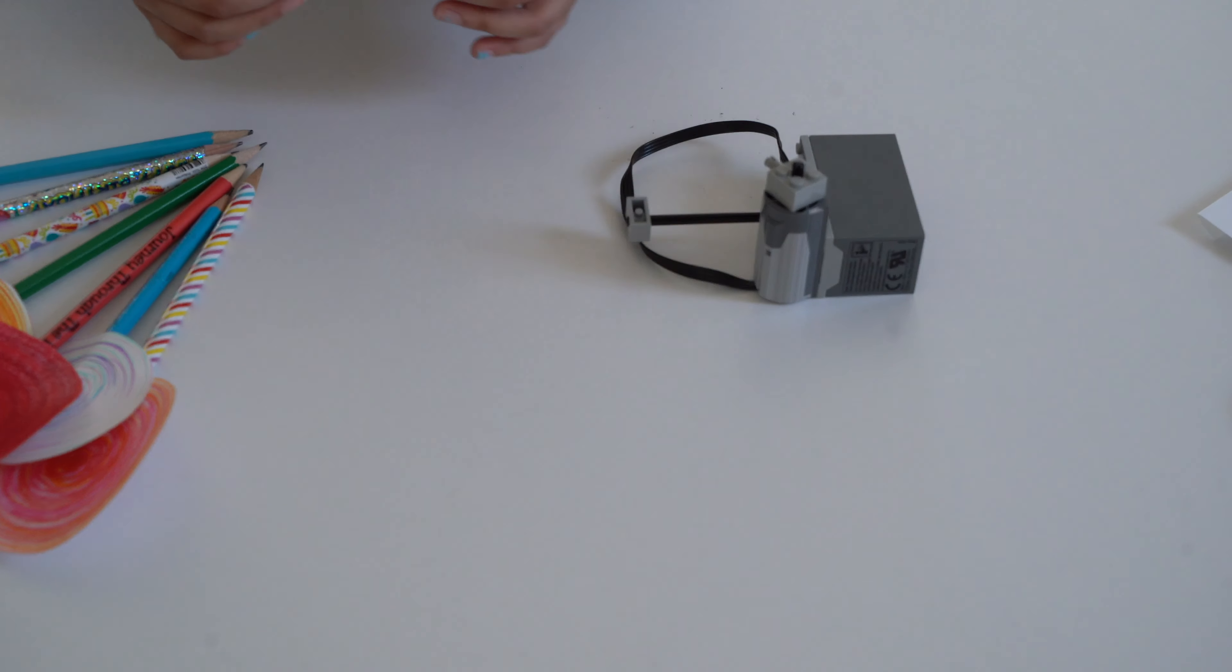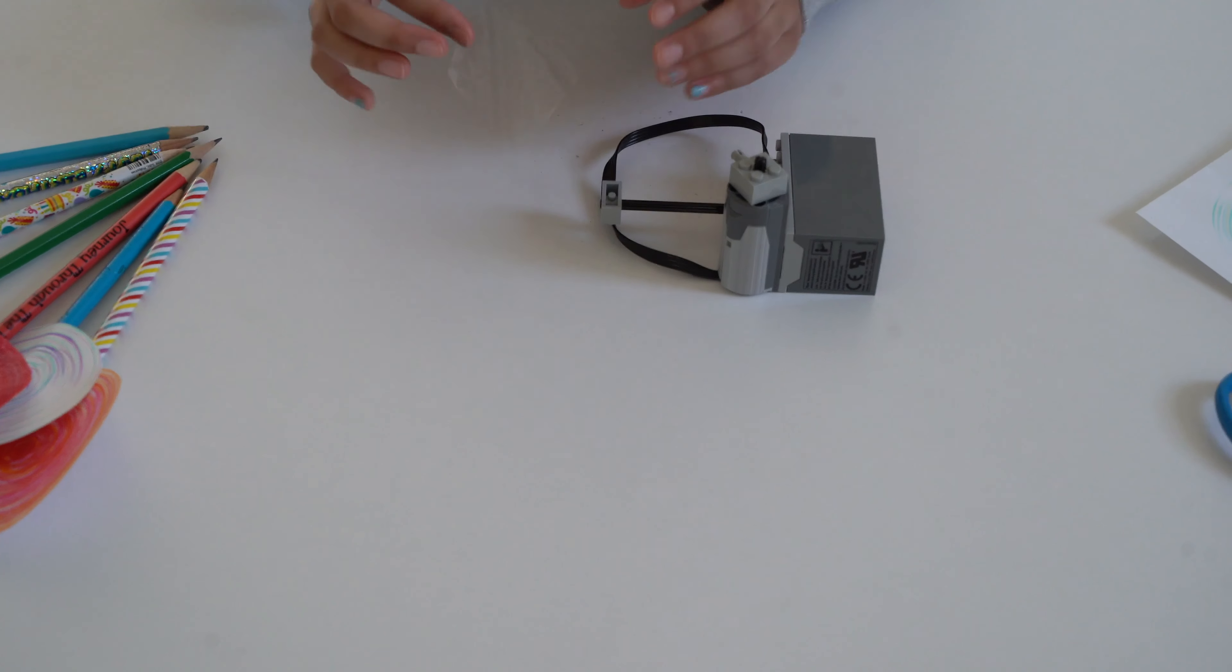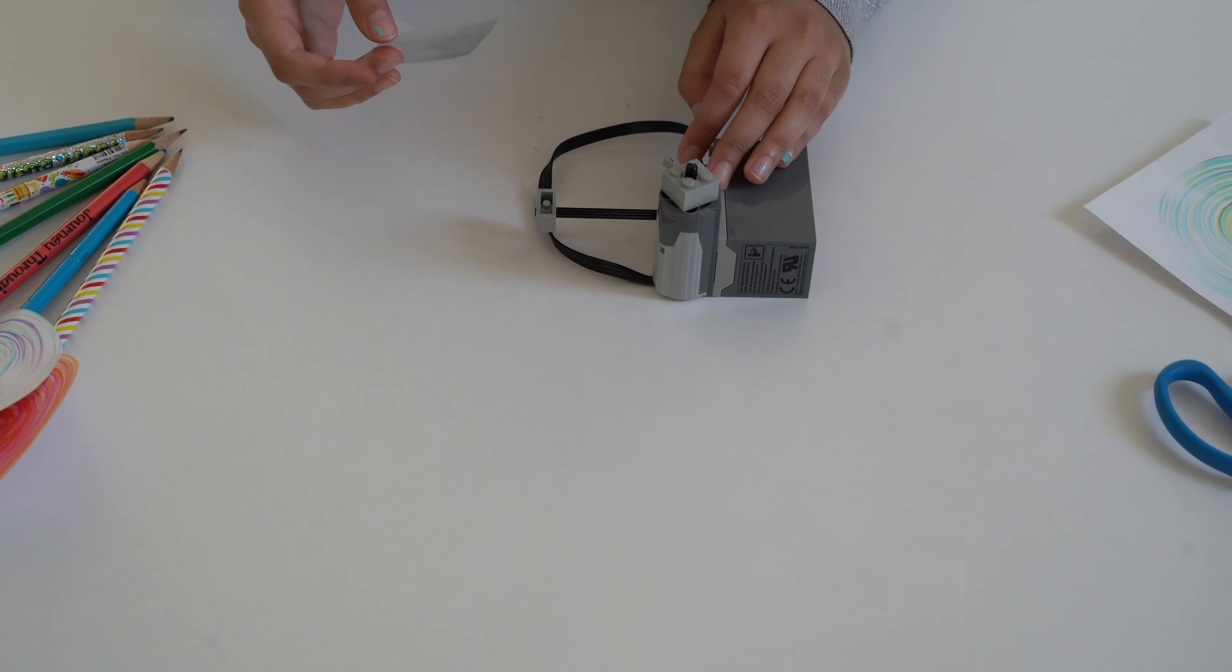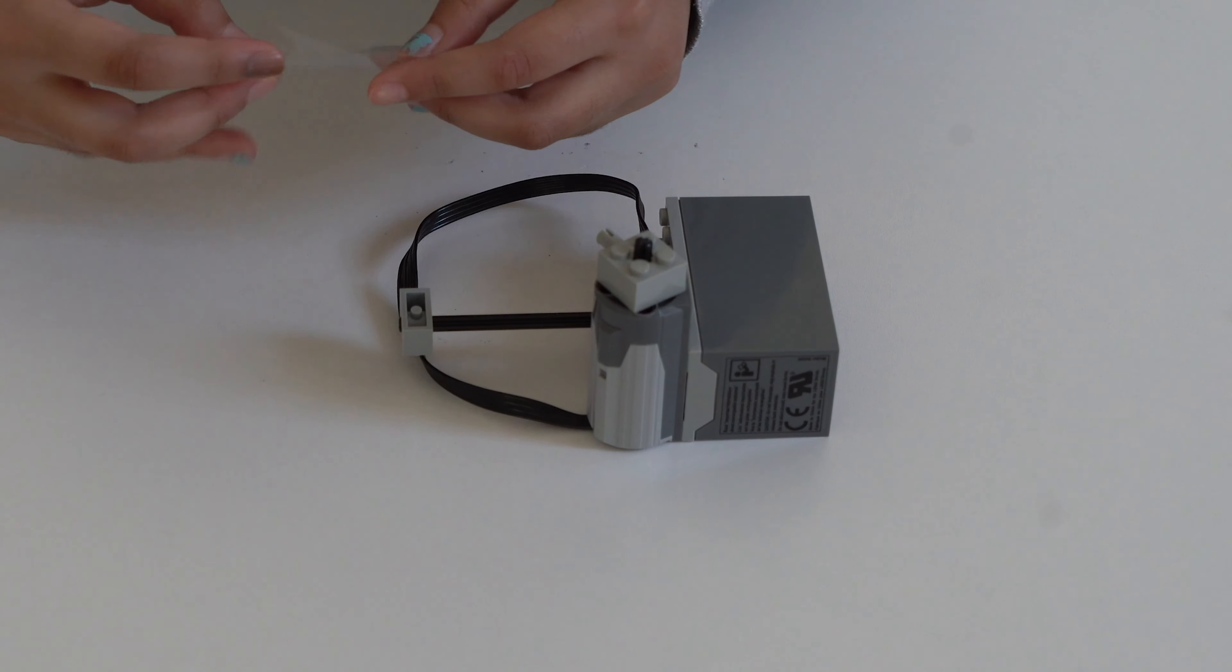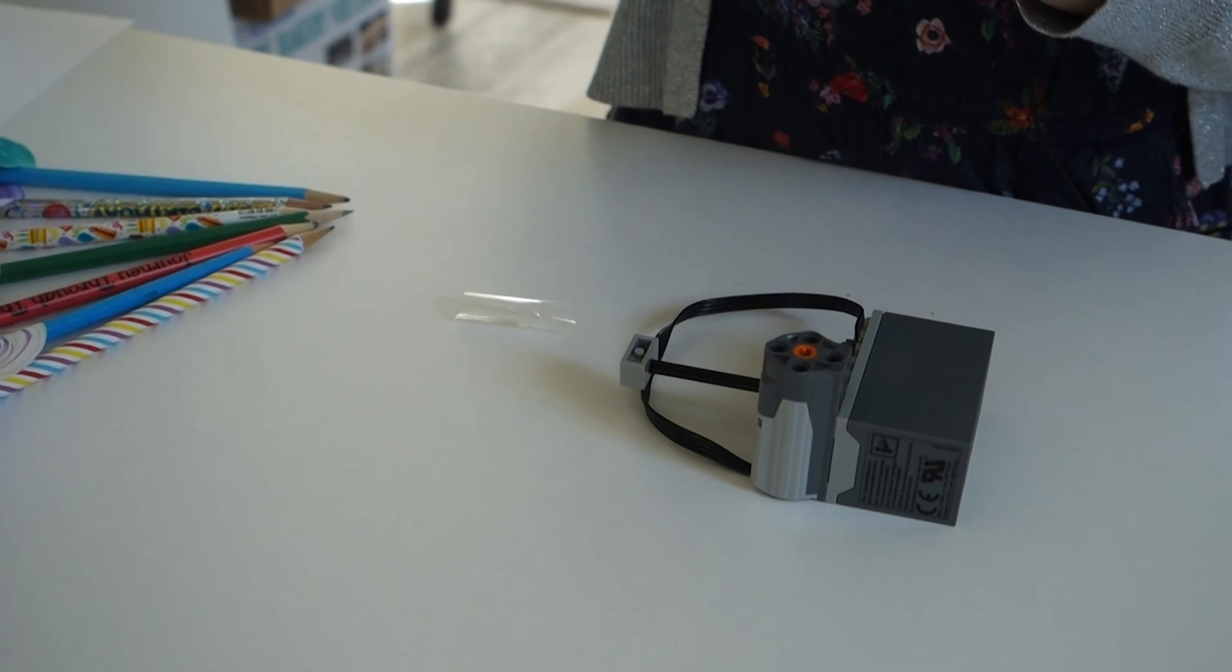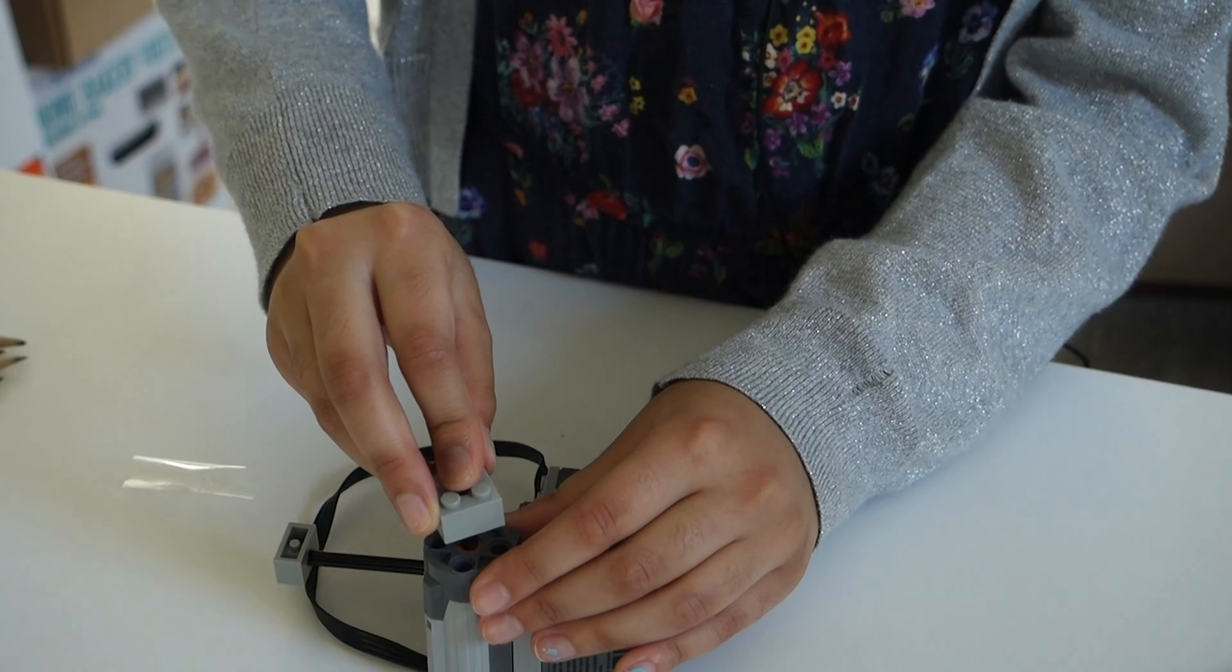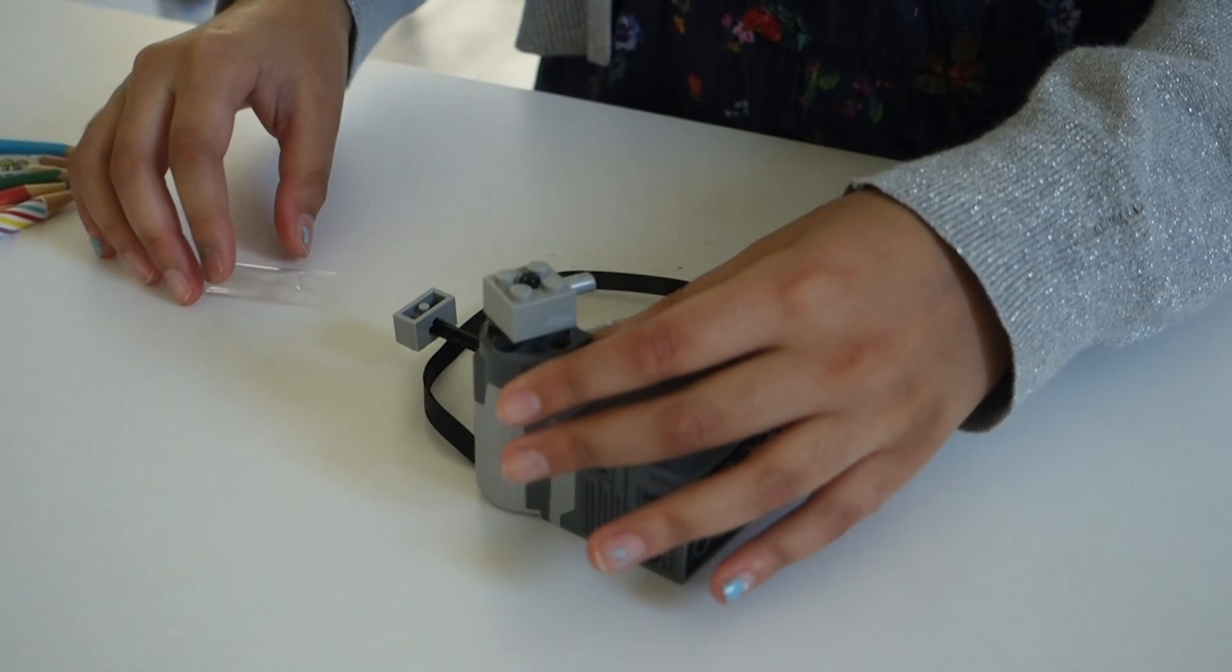To attach the paper, you're going to need some tape. There are other ways but the tape is the simplest way for me. You can attach the tape on any way you like as long as it sticks to the paper and the axle.